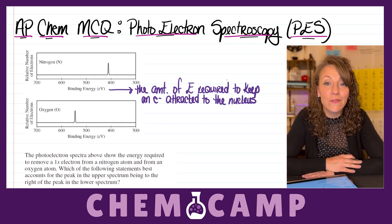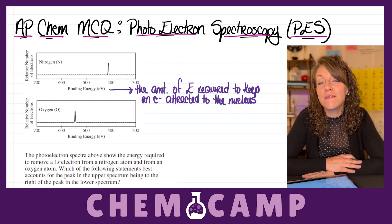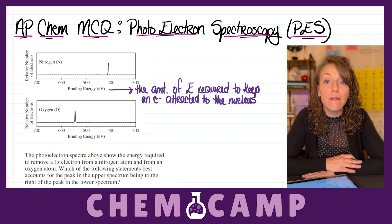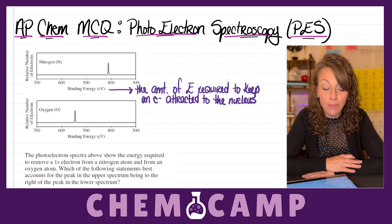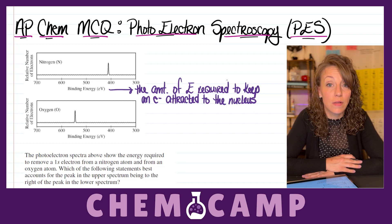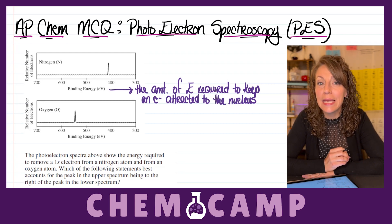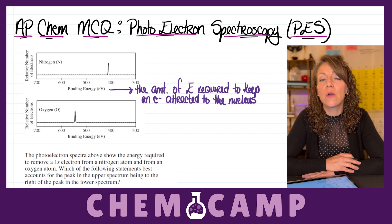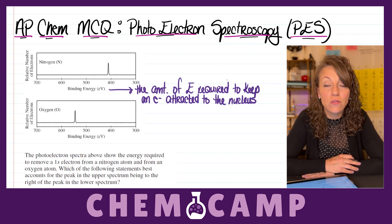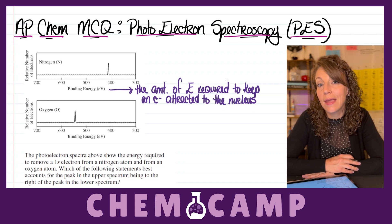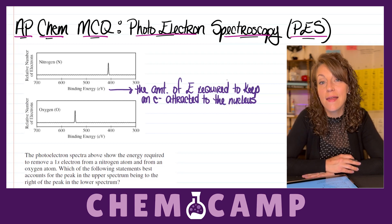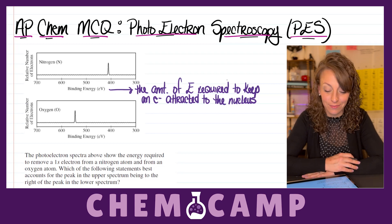The other piece of information we can pull from the spectrum involves the y-axis, labeled 'relative number of electrons.' The height of the peak in the spectrum corresponds to the number of electrons located at that particular energy level and sublevel.